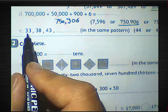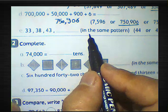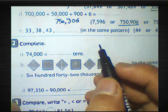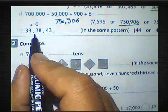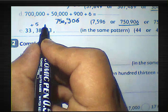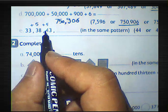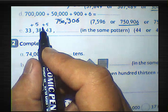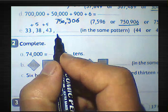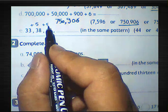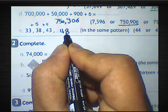Part E: 33, 38, 43 — complete the same pattern. We know 33 plus 5 equals 38, and 38 plus 5 equals 43. So the rule here is add 5. We want to find the next number by adding 5 to 43. The result will be 48.